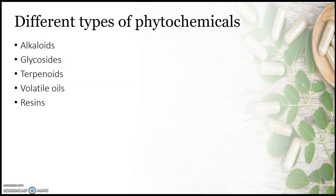Many scientists, by studying its phytochemical nature, categorize them into the following classes. These are, in general, alkaloids, glycosides, terpenoids, volatile oils, and resins.